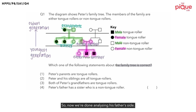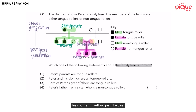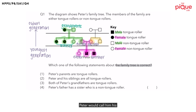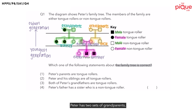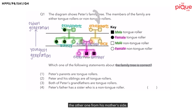Now let's take a look at his mother's side. His mother is connected to one person on her right — this person is her brother. Peter would call him his uncle. Let's go up one more generation: Peter would address these people as his grandparents. So over here, we see that Peter has two sets of grandparents — one from his father's side and the other from his mother's side.